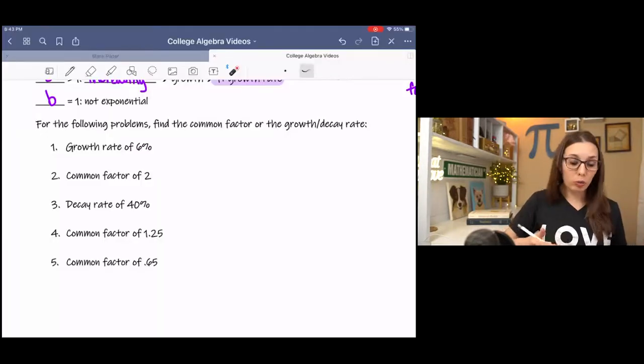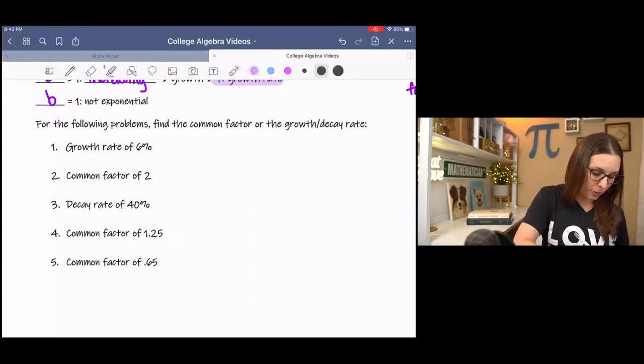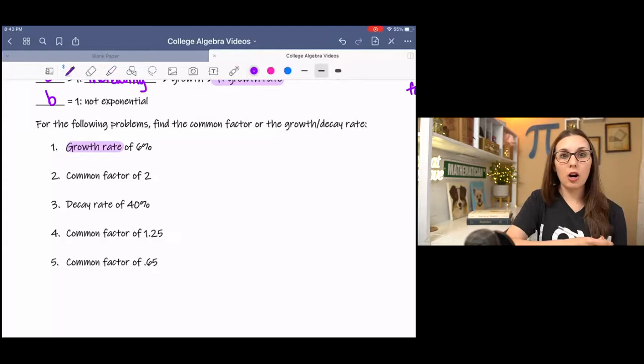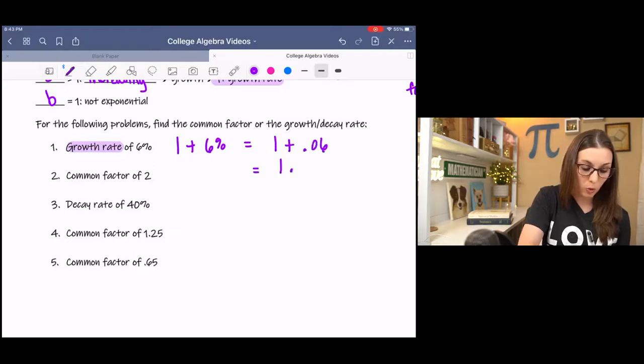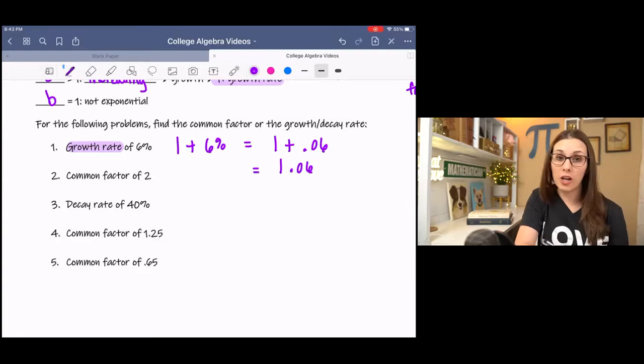A growth rate of 6% indicates that our change factor will be bigger than 1. So 1 plus this growth rate of 6% would be 1 plus 0.06, and that will be 1.06 for our change factor.